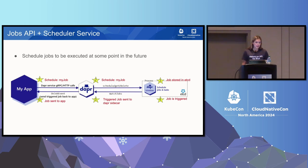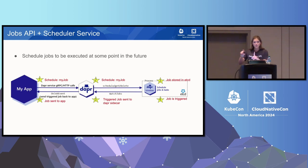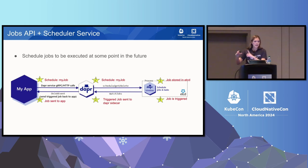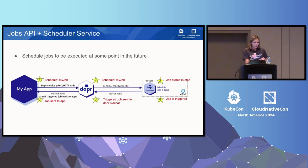Putting the whole thing together: if you were to schedule a job called my-job, it goes to the sidecar. The sidecar picks up the app ID and namespace and sends it along to the scheduler, where it lives inside that etcd database. The cron library magic does its thing, and at trigger time we send it back to any of the same app ID DAPR instances on a streaming connection called watch-jobs. From there, DAPR sends that back to your app.